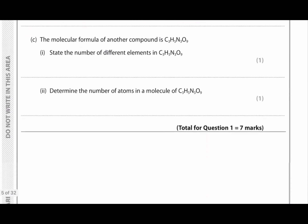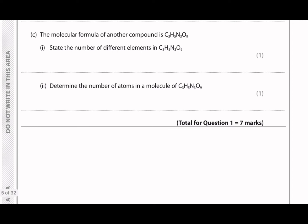Moving on to part C of this question. The molecular formula of another compound is C3H5N3O9. And the first part they ask to state the number of different elements in the compound. So each different capital letter is one different element. So here we have C, H, N, and O. That means we have four different elements.